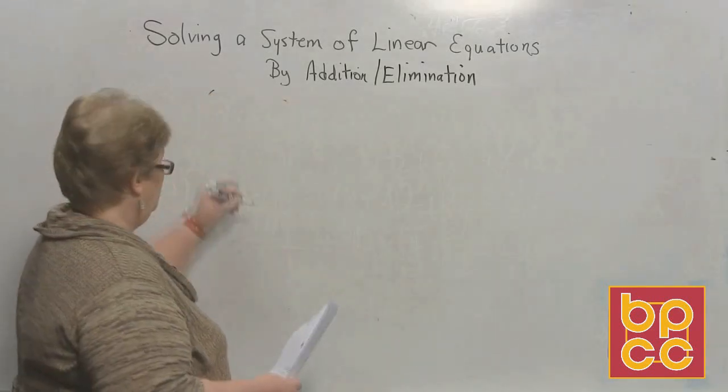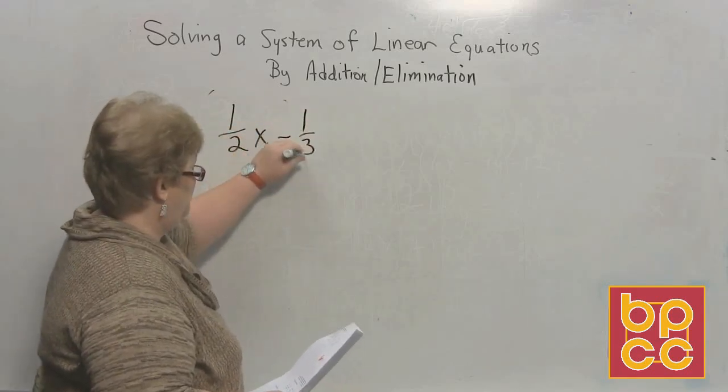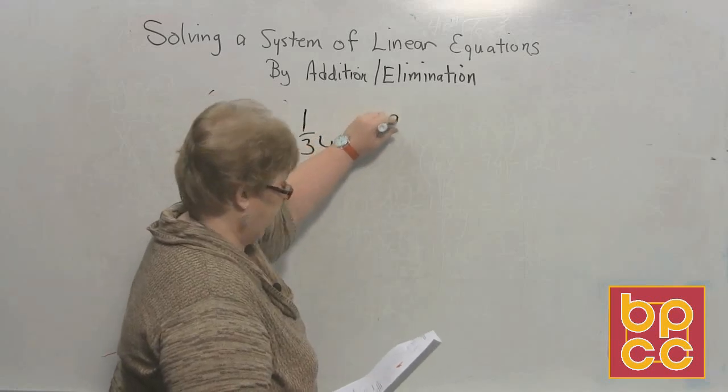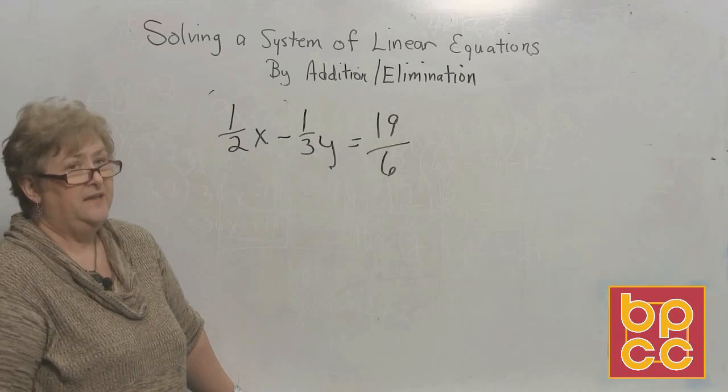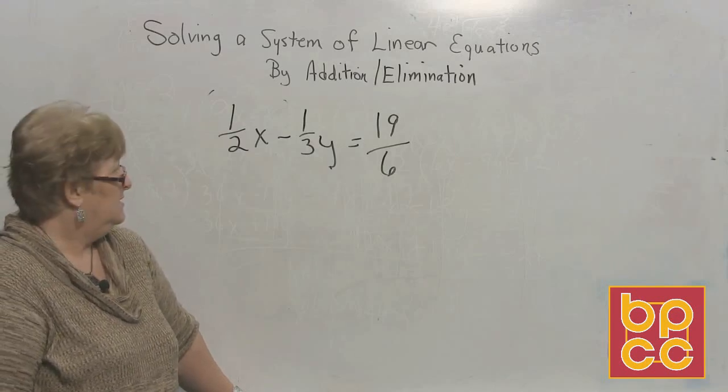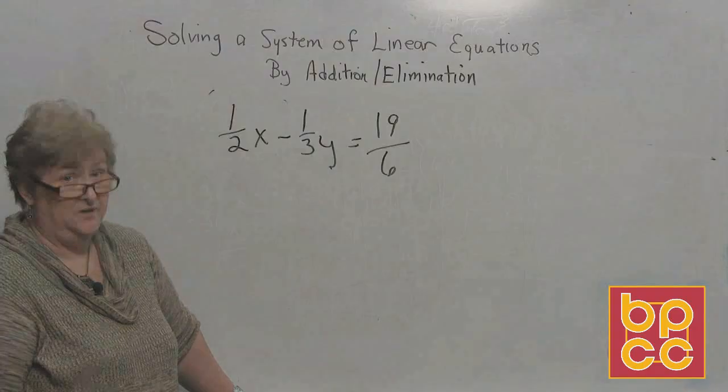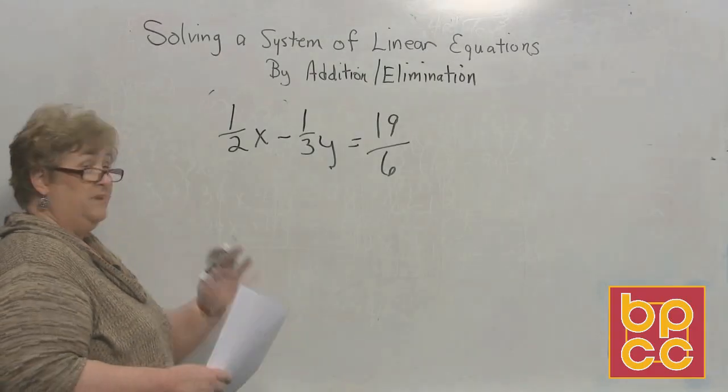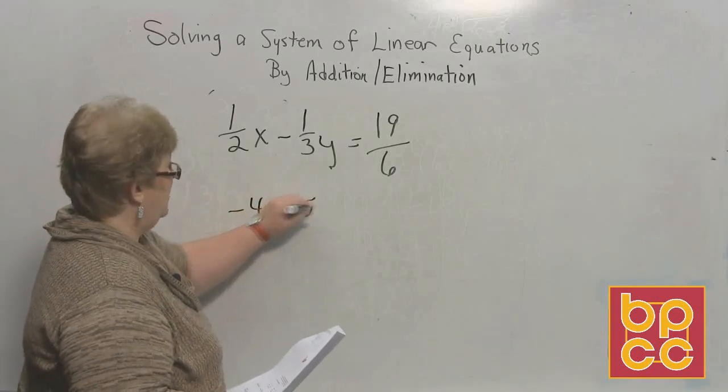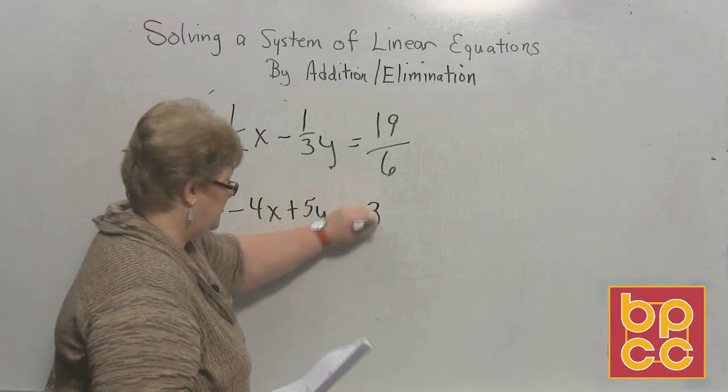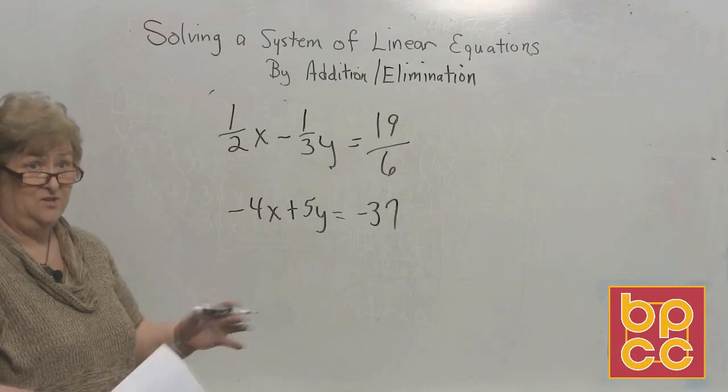This is probably the top level when it comes to solving through addition and elimination. I'm going to show you one-half x minus one-third y is equal to 19 over 6. Now, if you're like many of my students, they give fractions a bad rap. Don't be afraid of fractions. We're going to turn this thing into all whole numbers by simply finding a common denominator. But here's the bottom. I have a negative 4x plus 5y is equal to a negative 37.